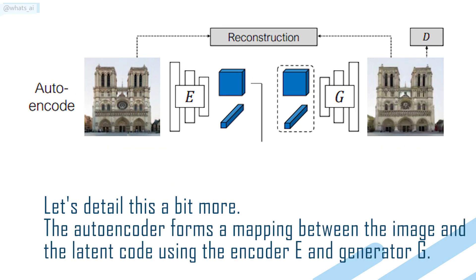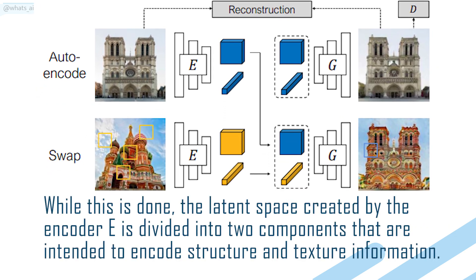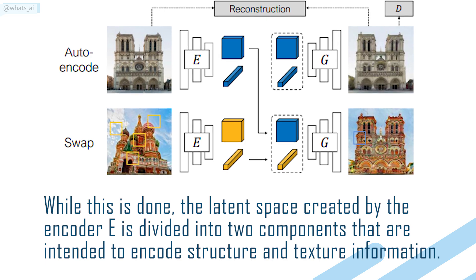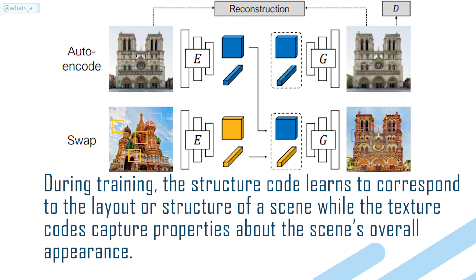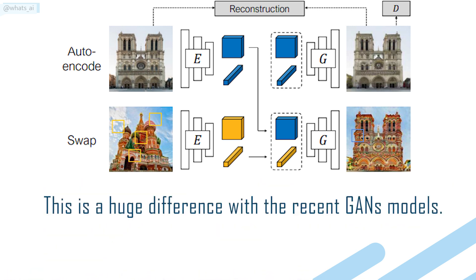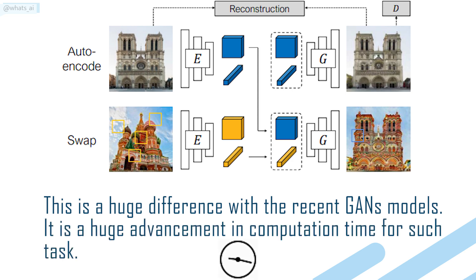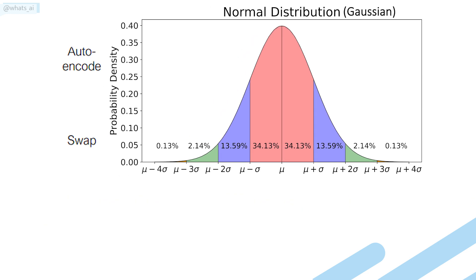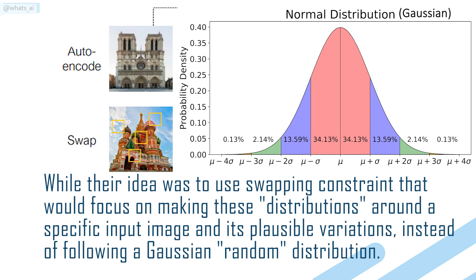The encoder forms a mapping between the image and the latent code using encoder E and generator G. The latent space created by encoder E is divided into two components intended to encode structure and texture information. During training, the structure code learns to correspond to the layout or structure of a scene, while the texture codes capture properties about the scene's overall appearance. GANs attempt to make this latent space Gaussian in order to enable random sampling, while their idea was to use swapping constraints that focus on making these distributions around a specific input and its plausible variations, instead of following a Gaussian random distribution.